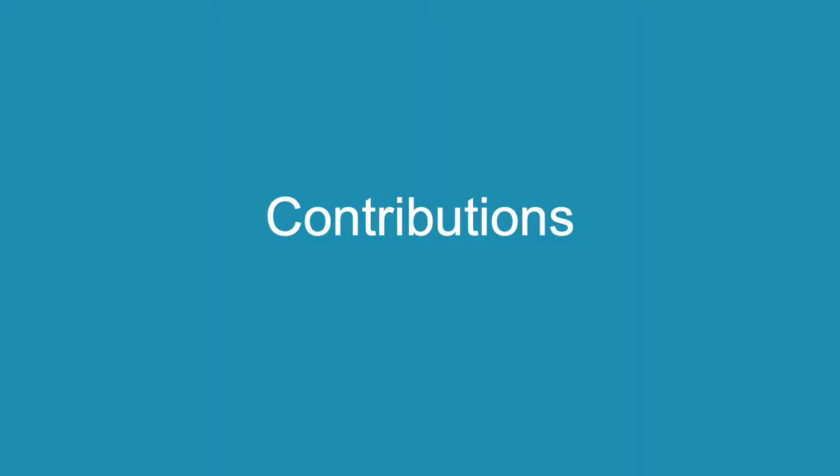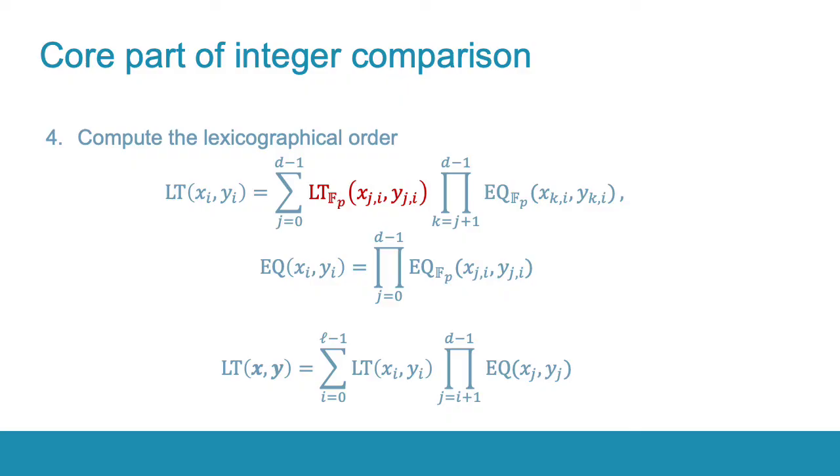So what are our contributions to this algorithm? Notice that the core part of the algorithm is the less-than function over the prime field Fp. In the existing literature this function is the slowest one in the pipeline, so how can we evaluate it more efficiently?